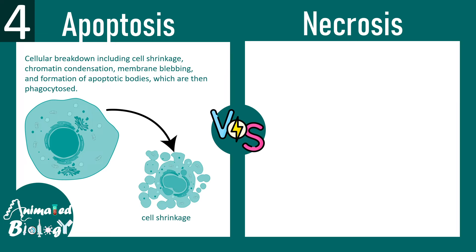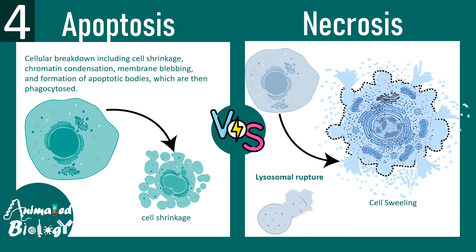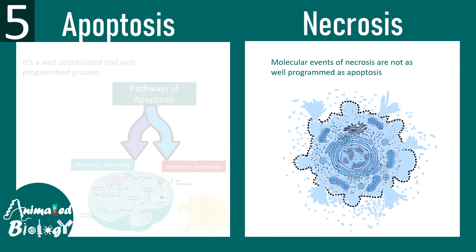In apoptosis the cell size generally shrinks because the membrane blebs out. In necrosis the opposite happens — the cell swells up, with leakage of fluid, and mitochondria and other organelles also swell up. Another factor in necrosis is lysosomal rupture: rupture of the lysosome releases hydrolytic and proteolytic enzymes into the extracellular environment, which is detrimental and can further evoke inflammation.